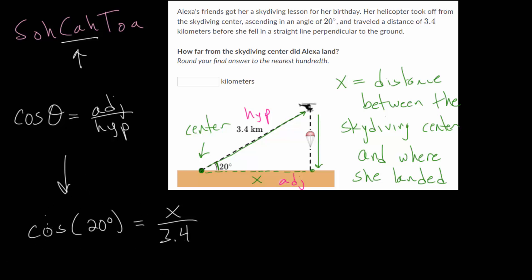And remember that cosine of 20 degrees, this is just a number. And so we're going to multiply each side of the equation by this denominator here, so that we can cancel it out and get x by itself. So we'll multiply each side by 3.4.